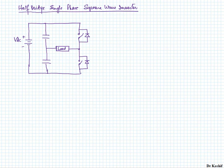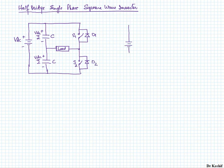The center point of these capacitors is used as one terminal of the load, and the second terminal of the load is the center point of the two switches used in this inverter circuit. There are two switches and two capacitors and one DC source. The capacitance is C, the voltage across each capacitor is Vdc/2, the switches are S1 and S2, and the anti-parallel diodes are named D1 and D2.